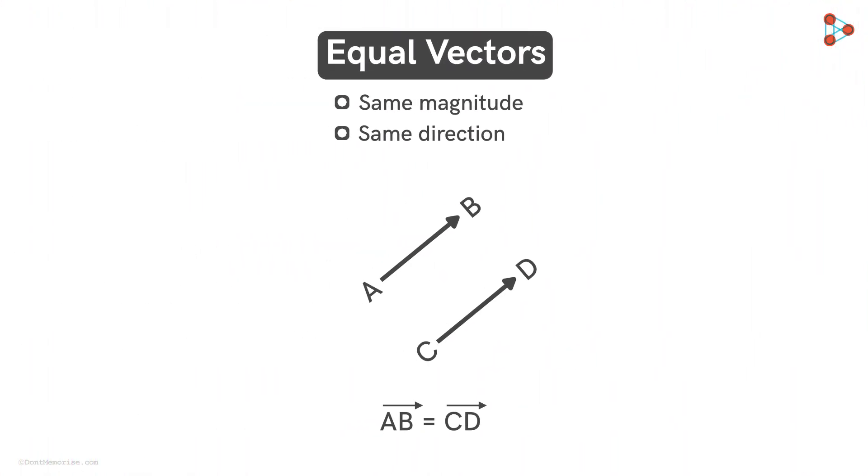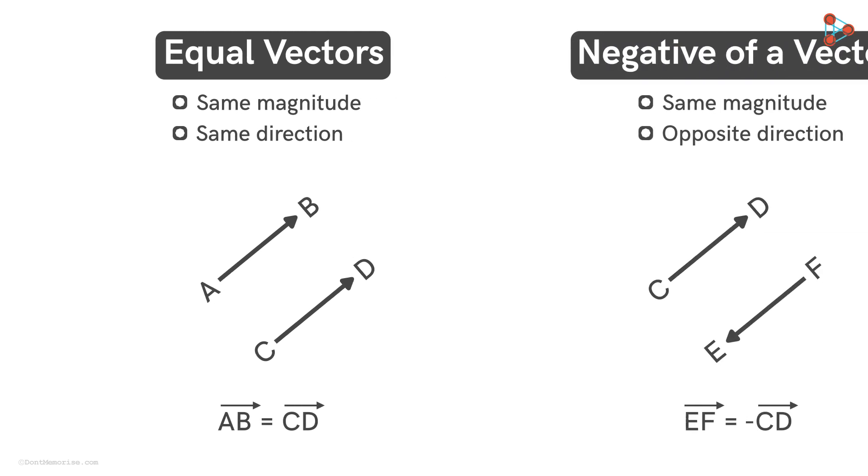So we saw here, when are two vectors equal to each other? And also, what's the negative of a vector?